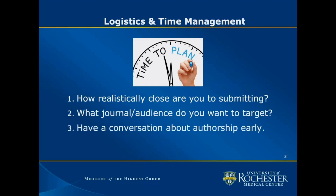Conversations about authorship, although they can be awkward, are actually very important and should happen early. If you are first author, the conventional expectation is that you collect the data, create the figures, put the story together, and write the first draft of the manuscript. Then all co-authors come in and contribute as well. It's good to have these conversations early so there are no surprises at the end that delay your submission. These are key logistics and time management tips for working towards publication.